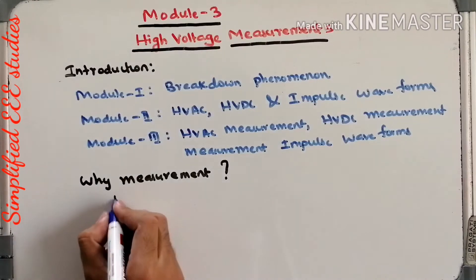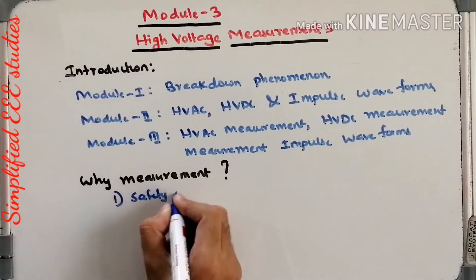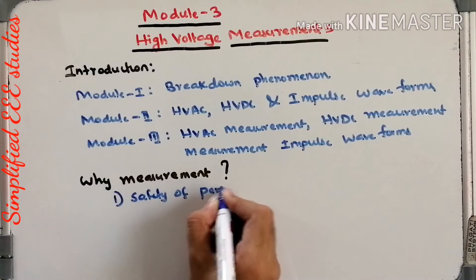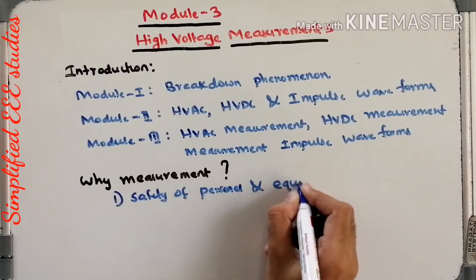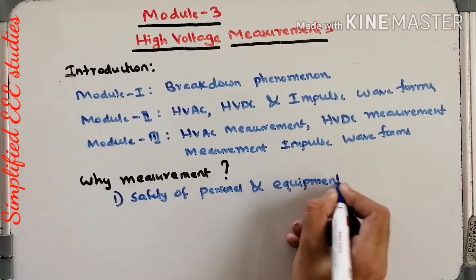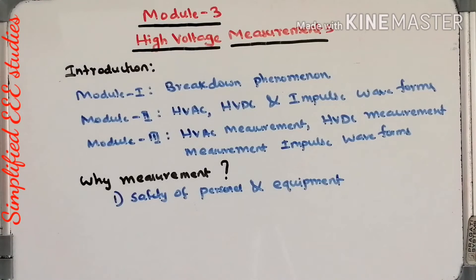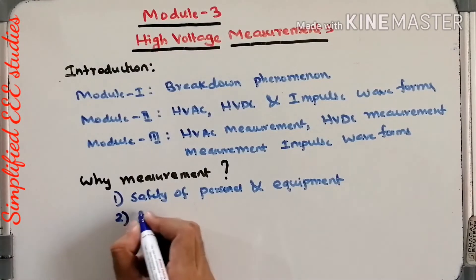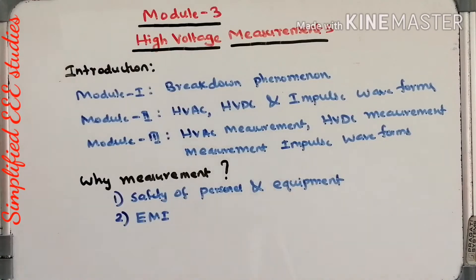Safety is most important. You need to know how much high voltage you are going to apply. Safety of personnel and equipment is the main consideration. The second consideration is EMI — electromagnetic interference. EMI has to be minimized; the EMI value should be as low as possible.